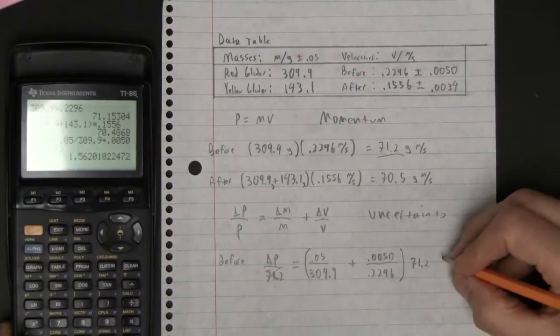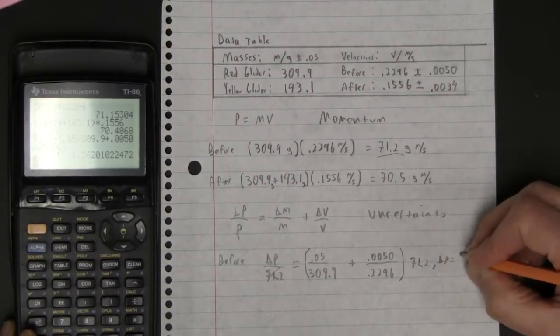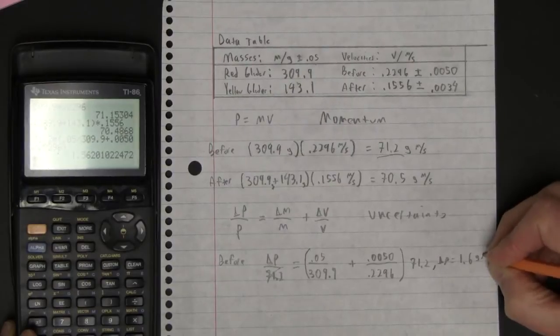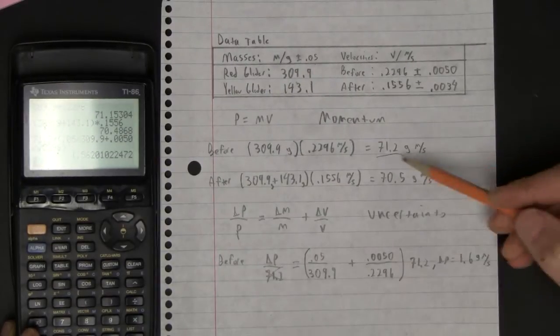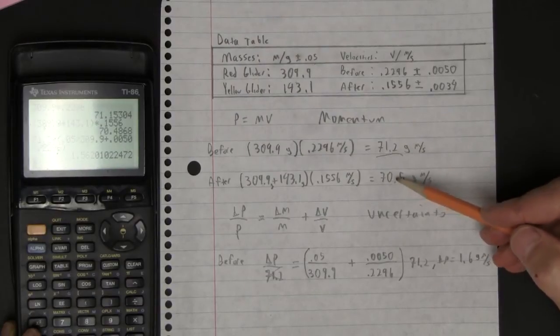that's 1.56. So I'm going to say that delta P equals about 1.6 gram meters per second. So it's looking pretty good. 1.6 is enough to bring that guy down to this guy.